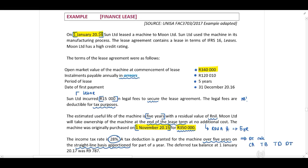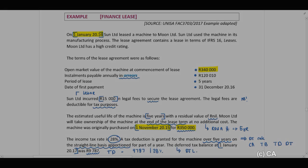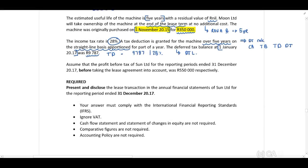The deferred tax balance on 1 January 2017 was $9,787. Remember, this is the deferred tax balance. If you need to calculate your temporary difference, you divide the $9,787 by 28%, and this balance is a deferred tax liability. The profit before tax of Sun Ltd for the reporting period ended 31 December 2017, before taking the lease agreement into account, was $550,000.